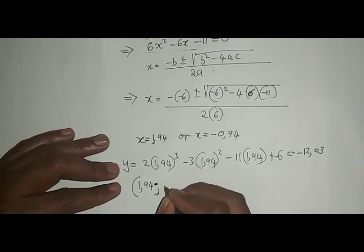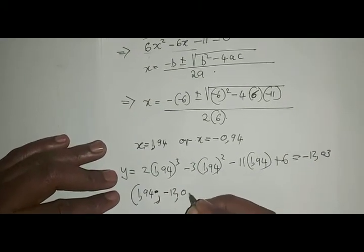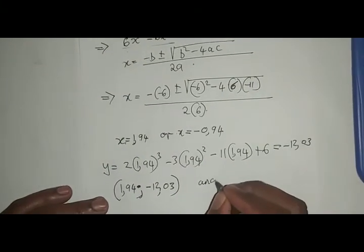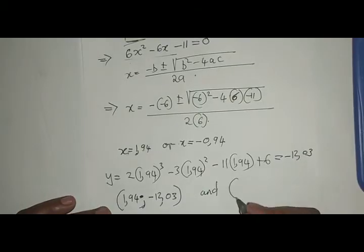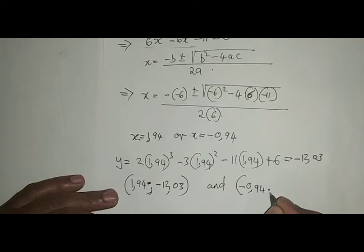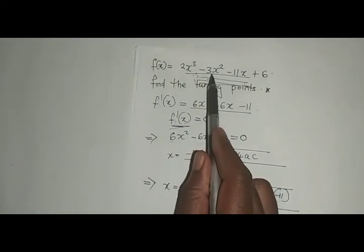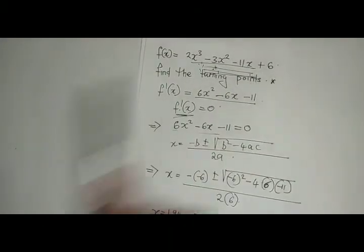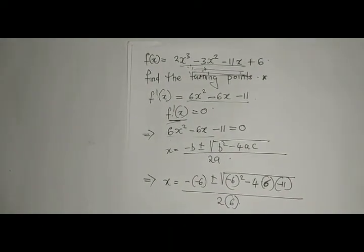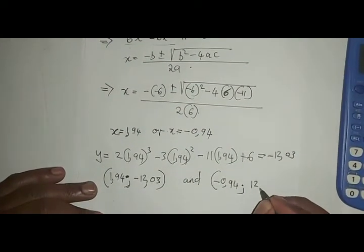Then the other turning point, you are now substituting -0.94. You substitute again into the original function. That's where you do your substitution there, and after substitution you can check with your calculator. It's giving you 12.03.